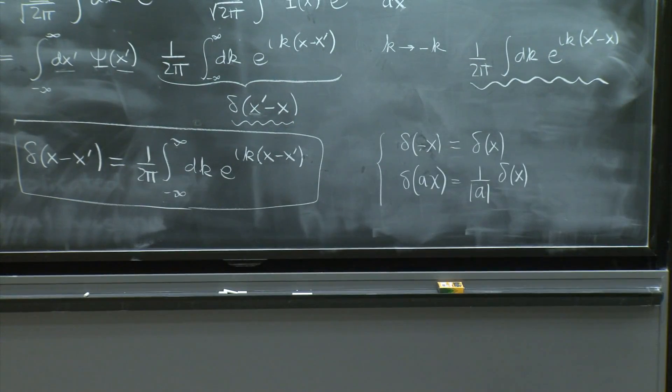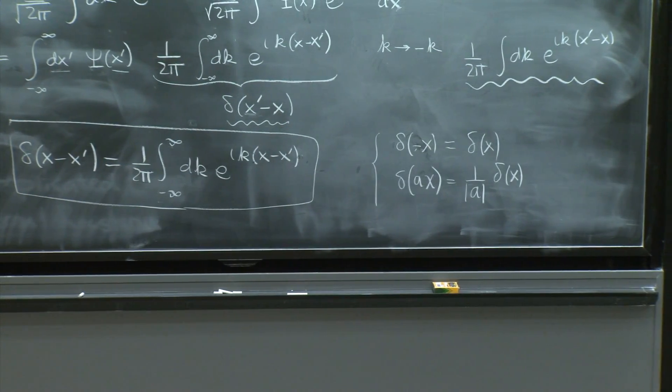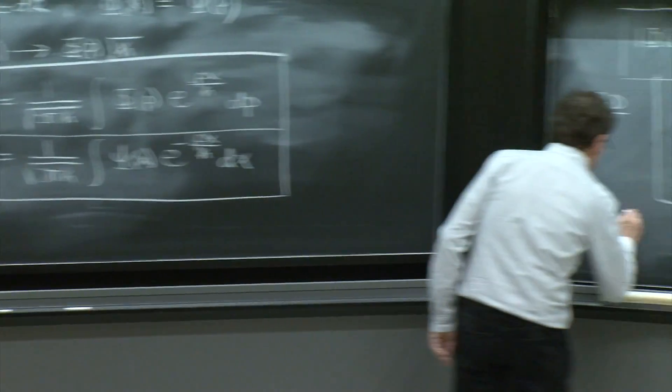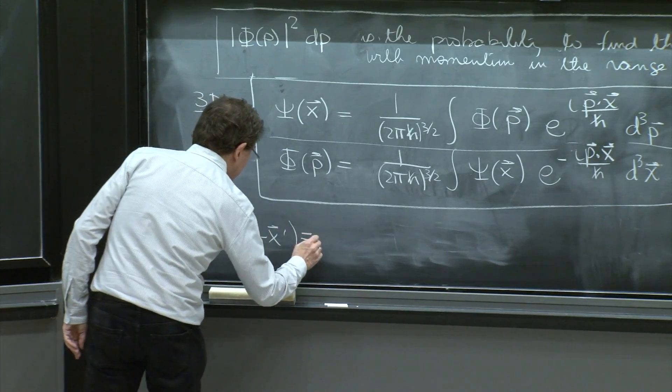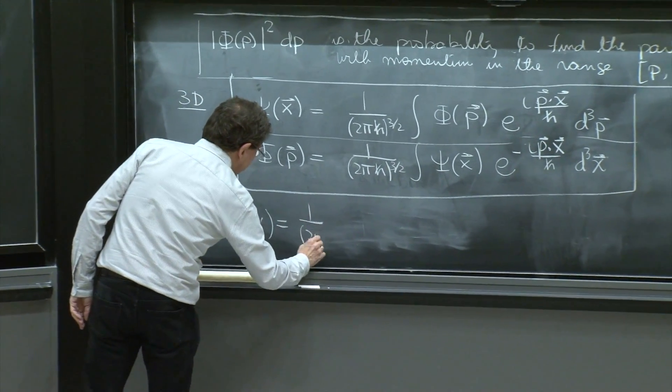A delta function in three-dimensional space would be delta cubed x minus x prime would be 1 over 2 pi cubed,